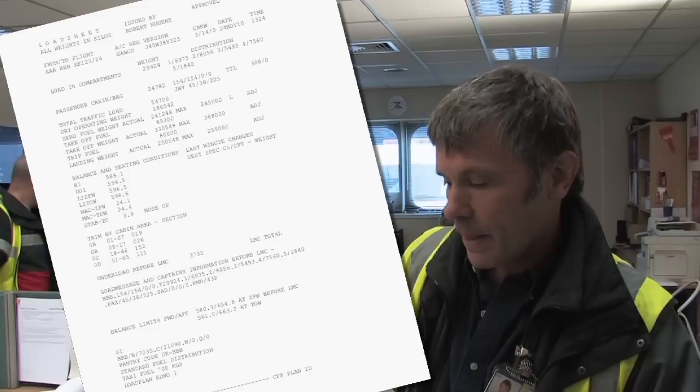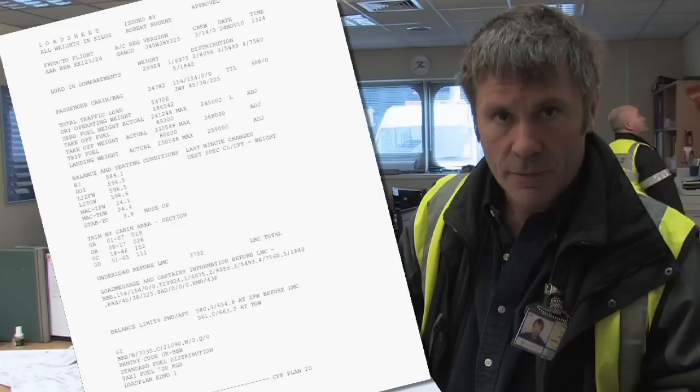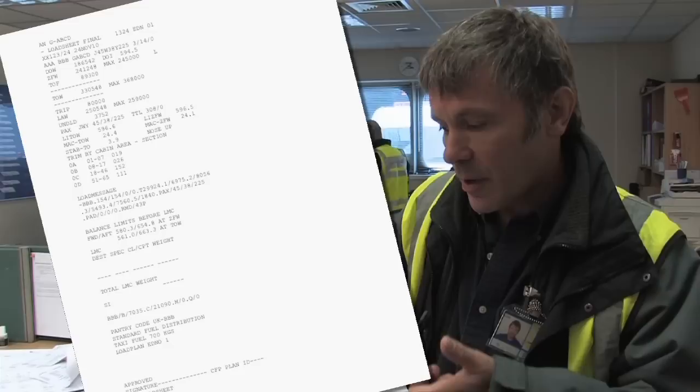When takeoff speeds and power settings are calculated for an aircraft, they're based on how much the aircraft weighs. How do you find that? Well, you look on something called the load sheet. Who makes a load sheet? Well, the load control office makes a load sheet — and those are these good people right here. Welcome to a typical load control office. Here is a typical load sheet. It contains vital information about the weight and balance of the aircraft. It's extremely important that the calculations on this document are cross-checked for accuracy. In an extreme situation, if they're in error, the aircraft may not even take off at all.